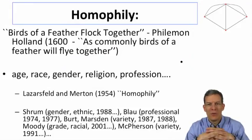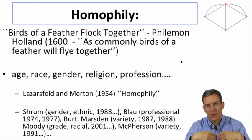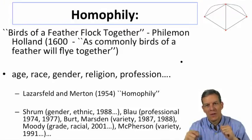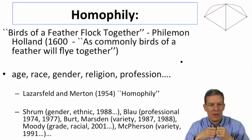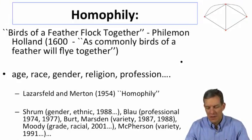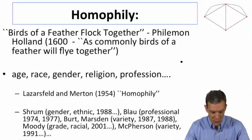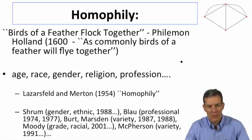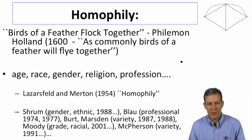Homophily refers to the fact that when, instead of just looking at a network without node attributes, we actually keep track of characteristics of nodes, we tend to find that linked nodes are similar to each other. This is something that's been recognized in human interactions for millennia. Here's a quote by Philemon Holland from 1600: 'Birds of a feather flock together,' or as commonly, 'birds of a feather will fly together.' Similar types interacting with similar types.